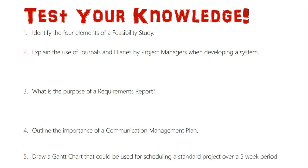Let's have a look at these next five questions. Question one: identify the four elements of a feasibility study. Question two: explain the use of journals and diaries by project managers when developing a system. Question three: what is the purpose of a requirements report? Question four: outline the importance of a communication management plan. Question five: draw a Gantt chart that could be used for scheduling a standard project over a five-week period.